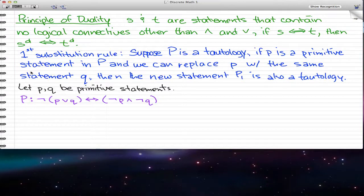I just want to go through the principle of duality, and pretty much what it is, is consider s and t being statements that contain no logical connectives other than and and or. If s is logically equivalent to t, then the dual of s is logically equivalent to the dual of t.